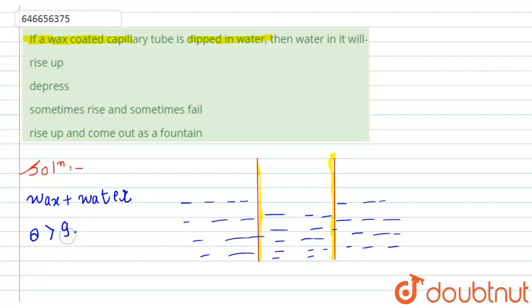According to this, the figure will form something like this. The surface of water will look like this, and the angle between the tangent of the water surface to the capillary tube surface will be theta, which is greater than 90 degrees.